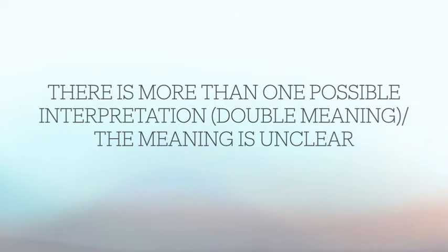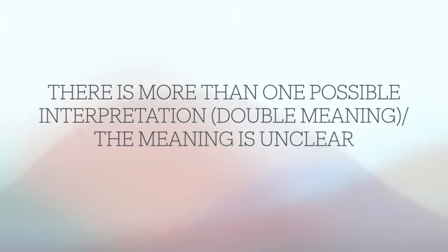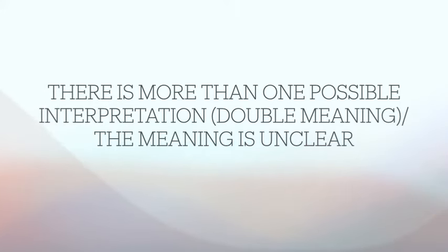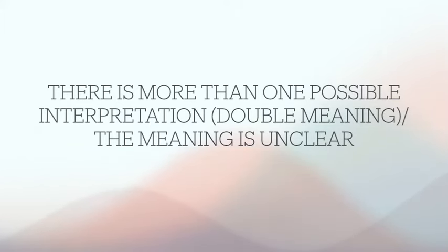Ambiguity is usually tested in a paper one context. Either your teacher or your examiner will ask you directly to identify the ambiguity, or they might ask you to correct the ambiguity based on the context. So you need to read the context, read the paragraph, understand what the intended meaning was, and then correct it. If you need to identify it, you have to show the two possible meanings that could come out of that sentence.